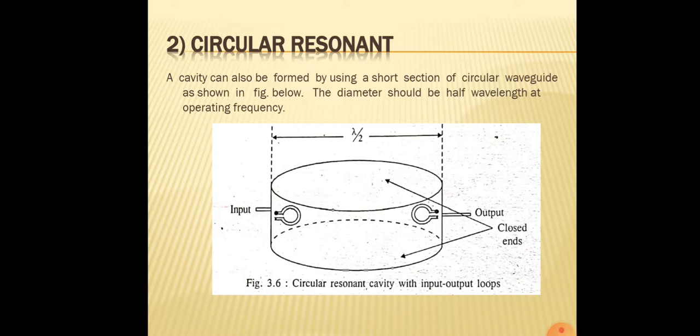A circular resonant cavity can also be formed using a short section of circular waveguide. As seen in the diagram, there are two probes and the diameter is lambda by 2 at the operating frequency. The coupling loop is commonly used in cavity resonators. One probe is the input and the other is the output, and the cavity can also act as a filter.